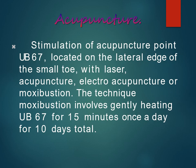Acupuncture at point UB67, located on the lateral edge of the small toe, can be applied using needle acupuncture, electro-acupuncture, or moxibustion. The moxibustion technique involves gently heating UB67 for 15 minutes once a day for 10 days total. Either massage, pressure, or gentle heat applied over the UB67 point will reduce nausea and vomiting.